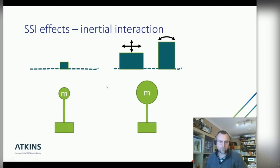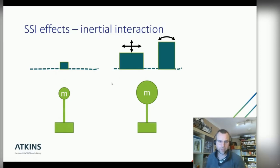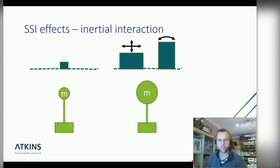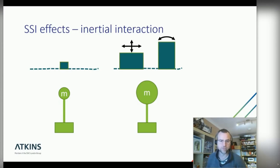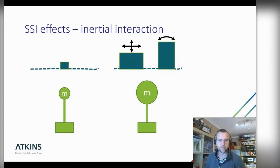These interaction effects not only change the seismic motion going into the structure, they can also change the properties of the ground itself — imposing additional strains alters stiffness and damping characteristics, which in turn affects wave propagation. Further complications arise when multiple structures are in close proximity, as the SSI of one building can affect another. This is known as structure-soil-structure interaction.